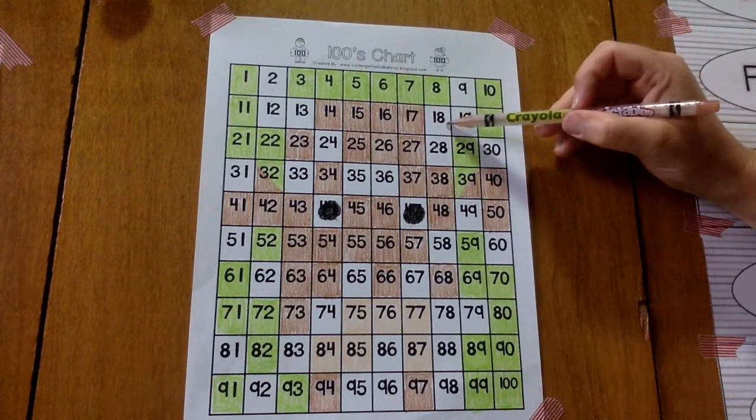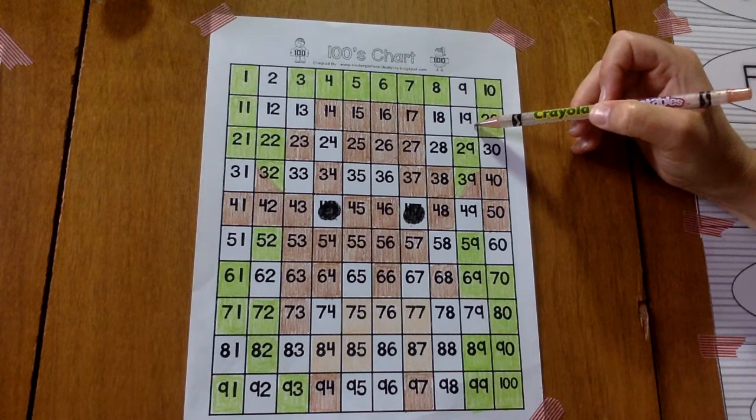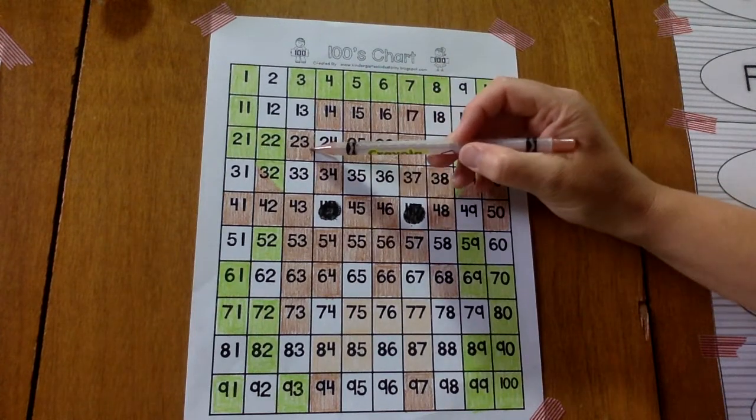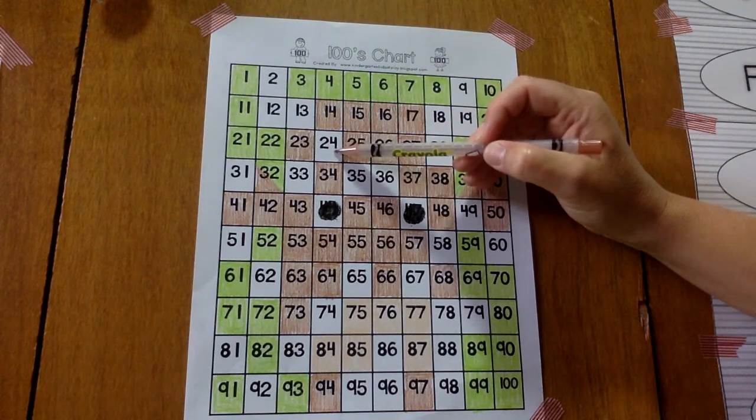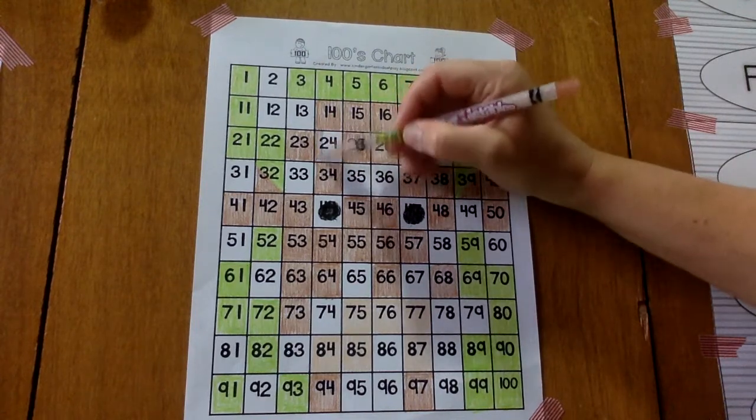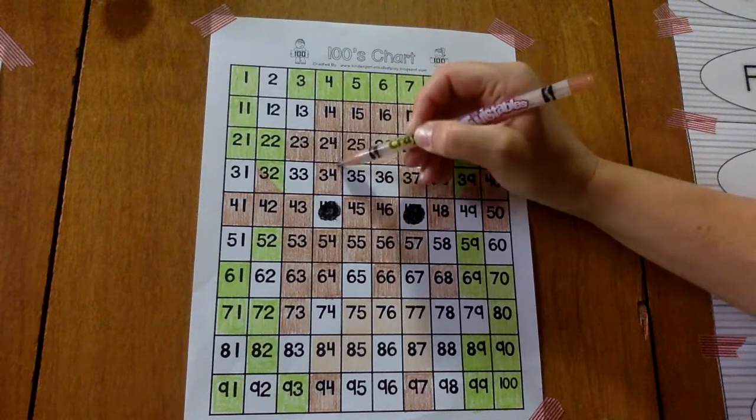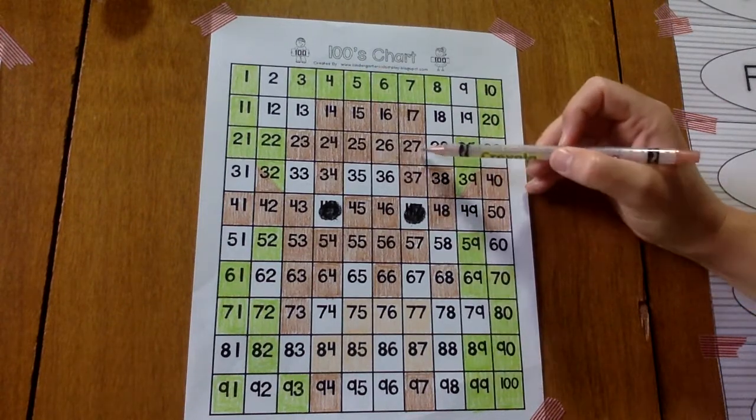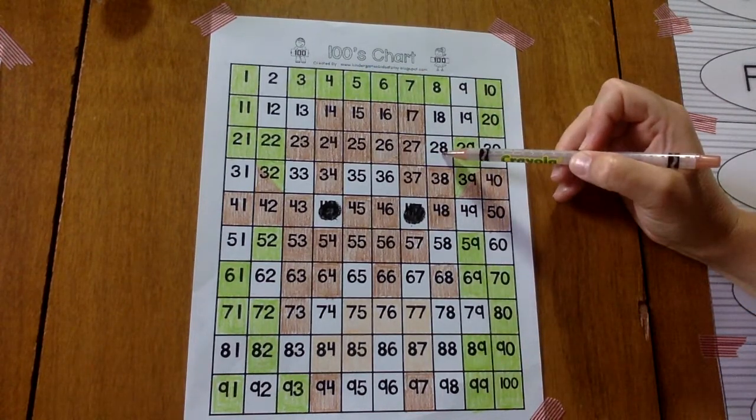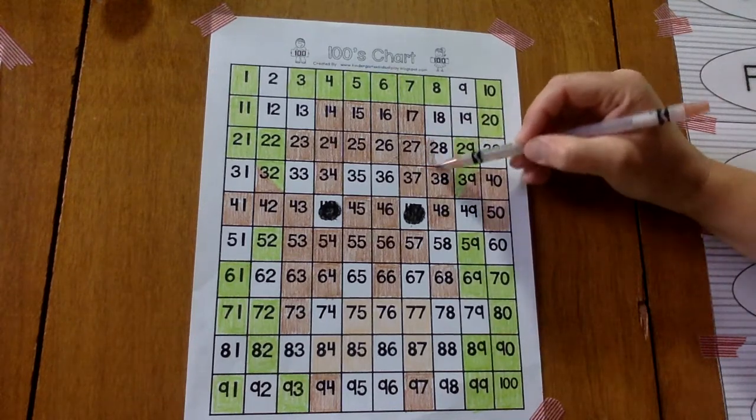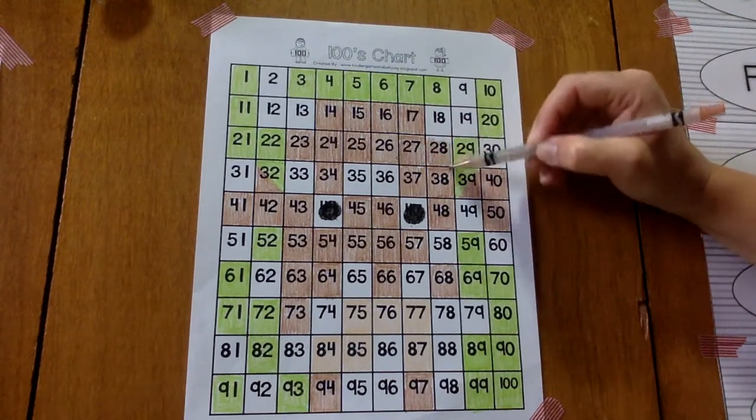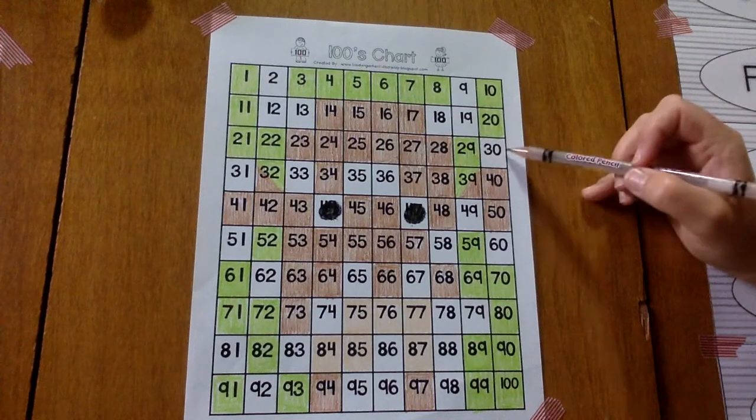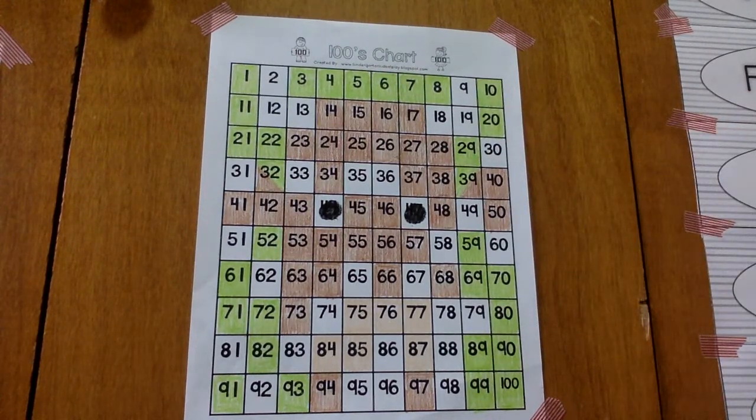We have 18, 19. We're leaving those white. Next comes 20. 21, 22, 23, 24. 24 is brown. What comes after 24? Yes, 25, 26, 27, 28. 28 is brown. 29, 30. 30 gets to be green.